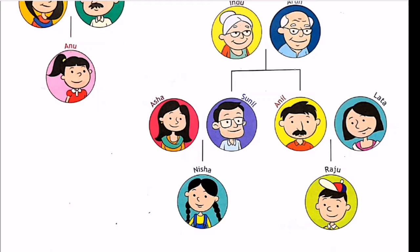Anil and Lata are Raju's parents. Raju's father is called Anil and his mother is named Lata. So Sunil and Asa are Raju's uncle and aunt. Similarly, Anil and Lata are Nisha's uncle and aunt. So Nisha and Raju are cousins — if you find the relation between the two, Nisha and Raju are cousins.